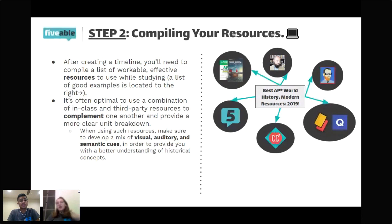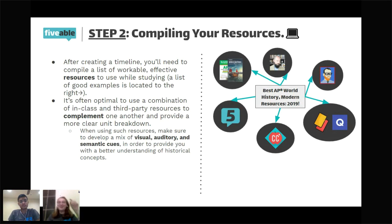Skylar mentioned she loves the AMSCO textbook — she used it for self-studying and it taught her a lot. Another recommendation is the Ultimate Guide to AP World, made by Dylan Black, an intern at Fiveable. Mackenzie in the comments says the Five Steps to a Five study guides are useful as well. I recommend going through AMSCO or Barron's during the school year, then reviewing Five Steps to a Five before May — it gives you a consolidated overview, whereas Barron's and AMSCO give you a more detailed one. The Princeton Review textbook is more of a right-before-the-test quick review thing.